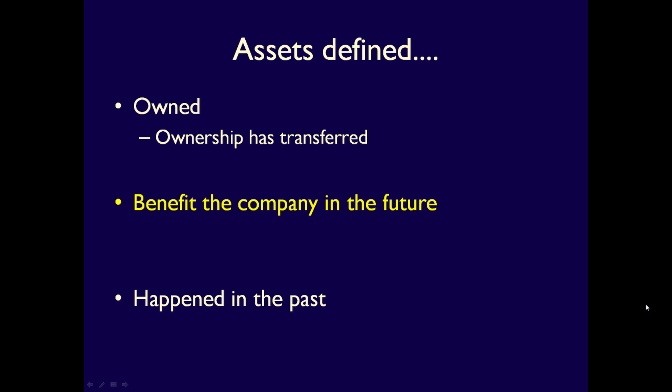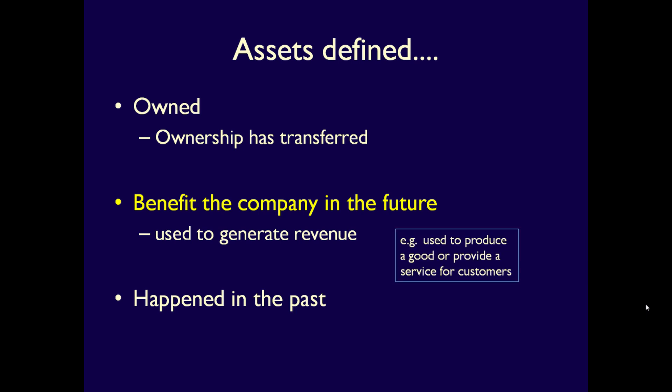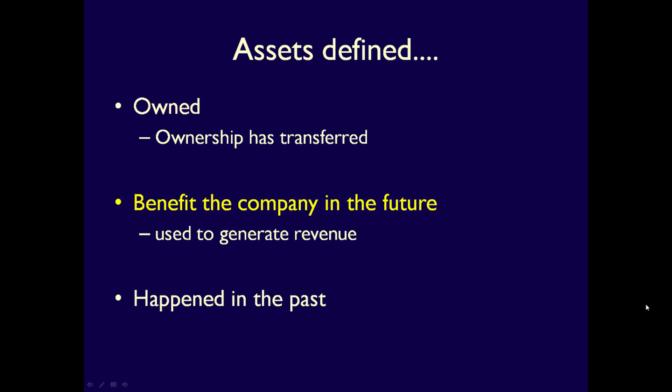Second, assets provide future economic benefit, meaning that assets will be used either directly or indirectly to help the business. The concept of future economic benefit is critical to assets. An asset might be used to produce a good or provide a service to customers — like a machine used to manufacture potato chips, or a lawn mower used to provide lawn care services. It might also mean the asset will be used to get another asset, like giving up cash to get a machine, or to get rid of a liability, like paying down a loan with cash. Assets must have future economic benefit for the business, or they're not considered assets.